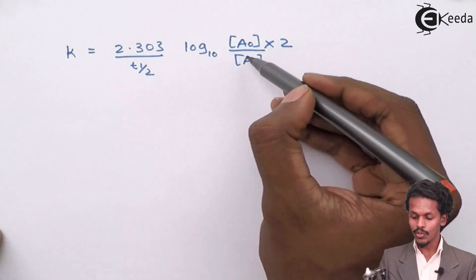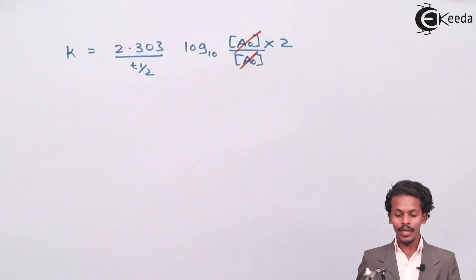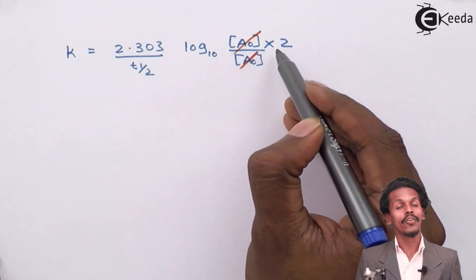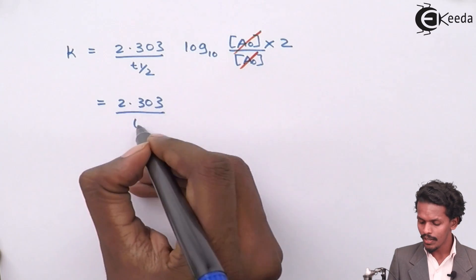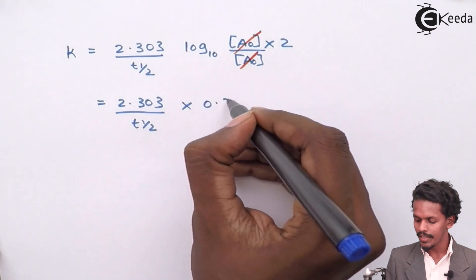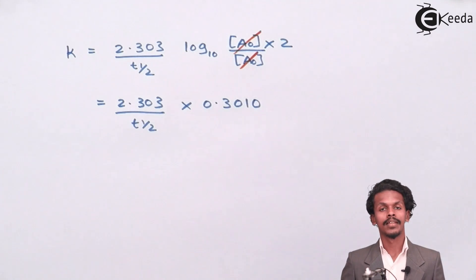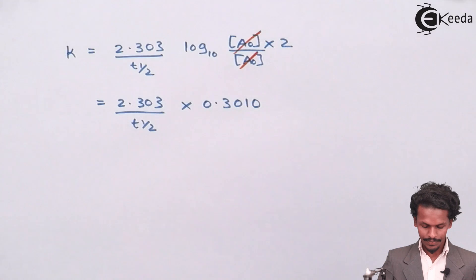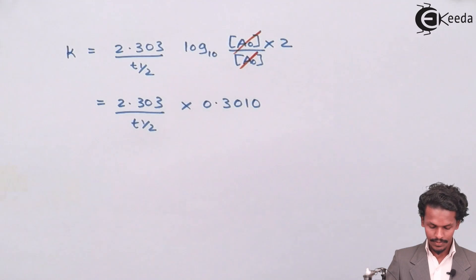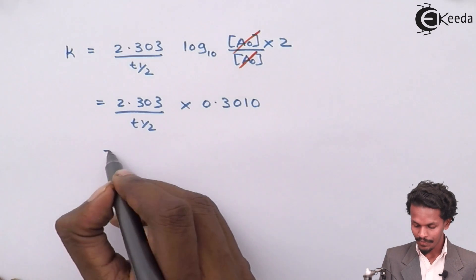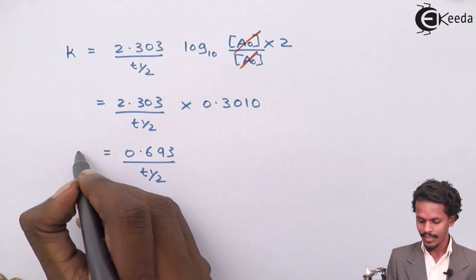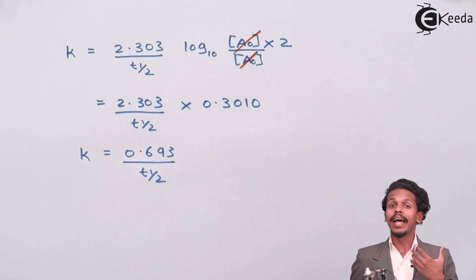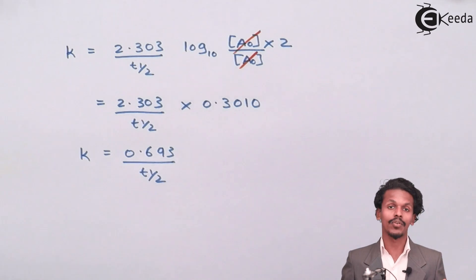In this case, A₀ and A₀ cancel out with each other, and the value left is log 2. The value of log 2 is 0.3010. So if we multiply 2.303 by 0.3010, we get k = 0.693 / t½. This is the value of the rate constant expressed in terms of half life for the first order reaction.